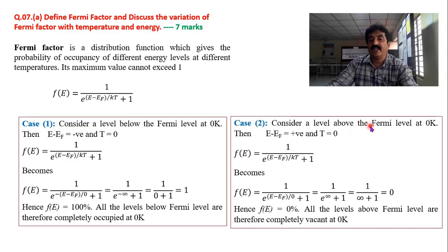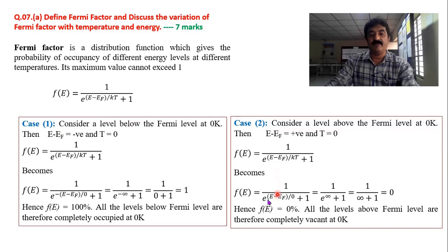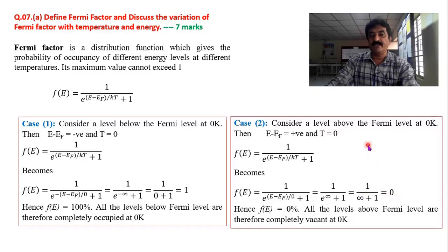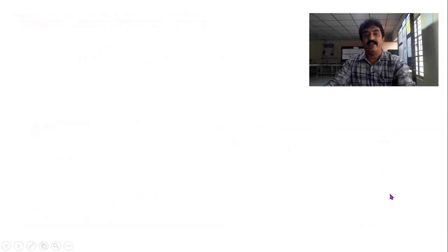Second case: I take a level above the Fermi level. Above the Fermi level means E minus EF is greater than 0, that is positive. In that case, the first term becomes e^(+∞) = ∞, and 1/∞ = 0. So F(E) = 0, meaning any energy level above the Fermi level is completely vacant — 0% occupancy.